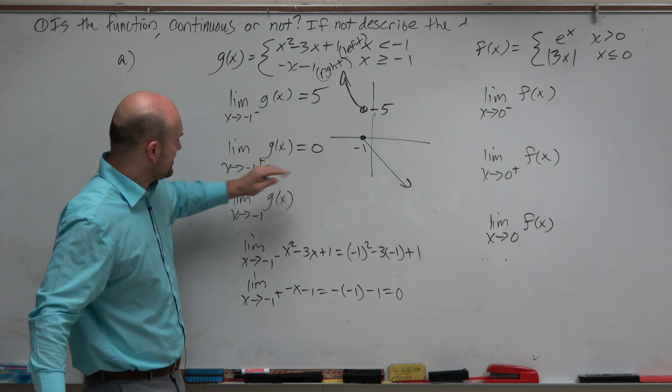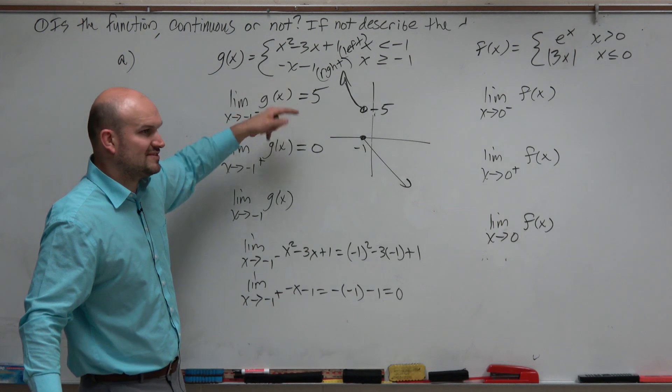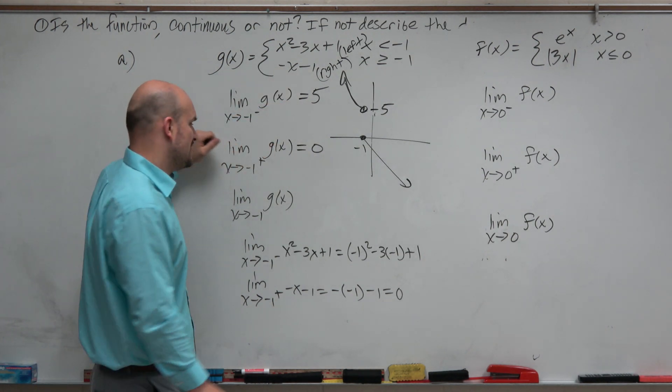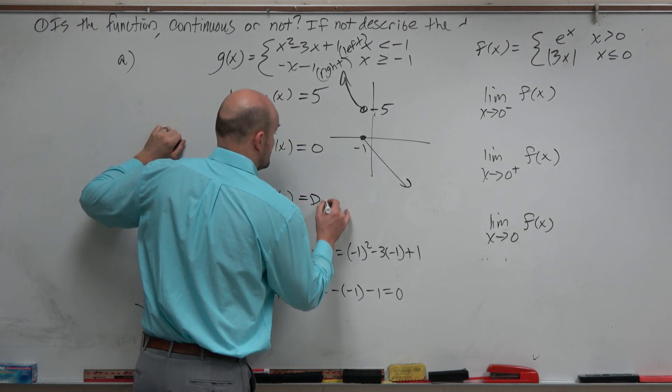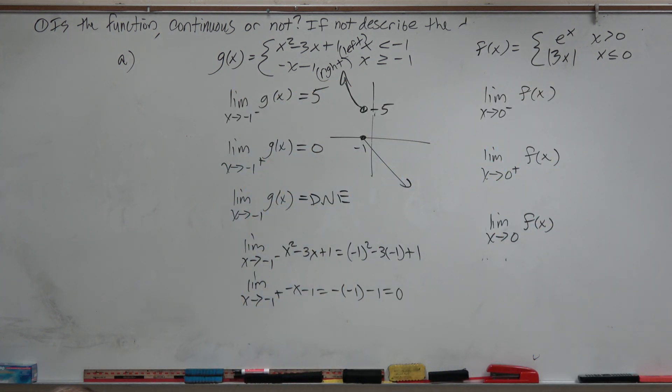I asked you for the left-hand limit, the right-hand limit. And then, what is the general limit? Well, since the left and right-hand limits don't approach the same number, the general limit does not exist. For your problem, you have a very similar problem. The only difference is you have an absolute value and an exponential.